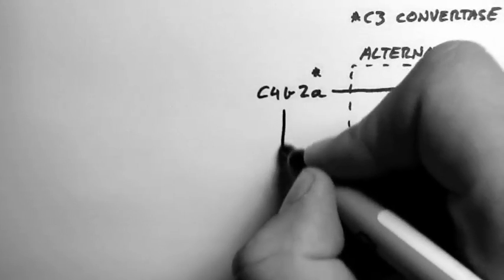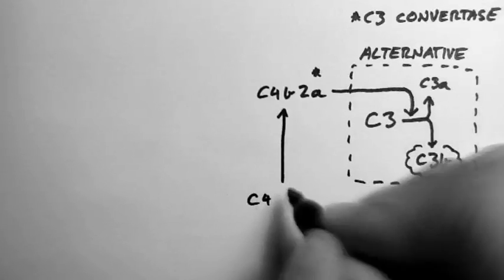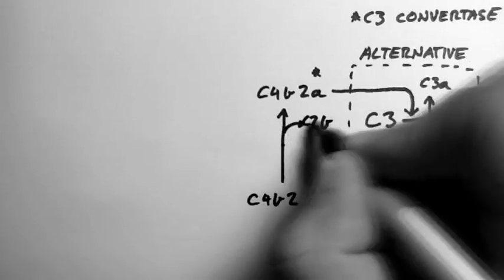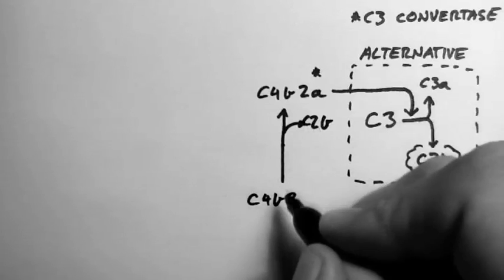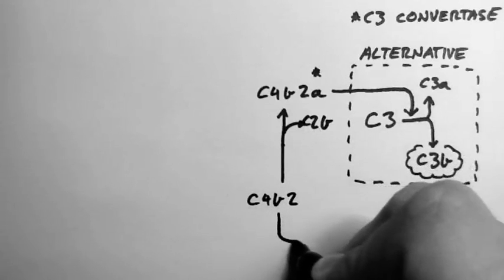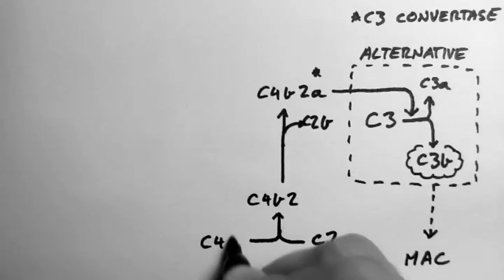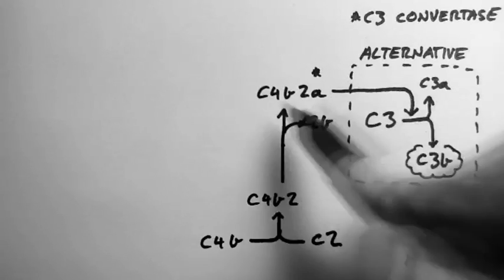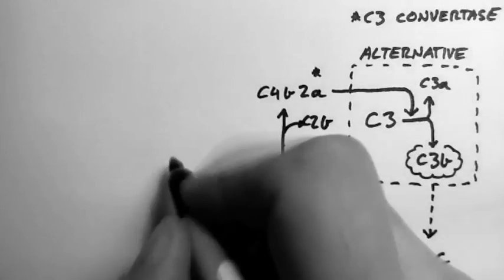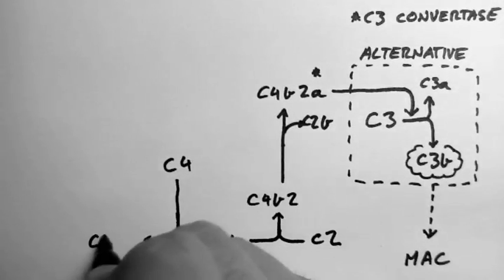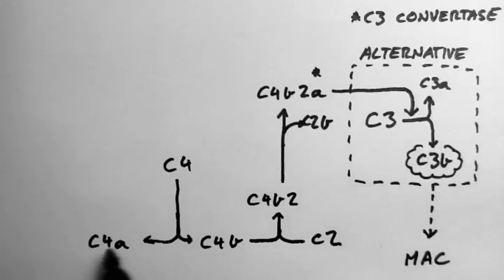Now, C4b2a is made from C4b2, and the C2b portion is cleaved off it. C4b and C2 are each cleaved into their component parts. C2a and C2b play no role in this pathway, but some of them have other functions which we won't discuss here.